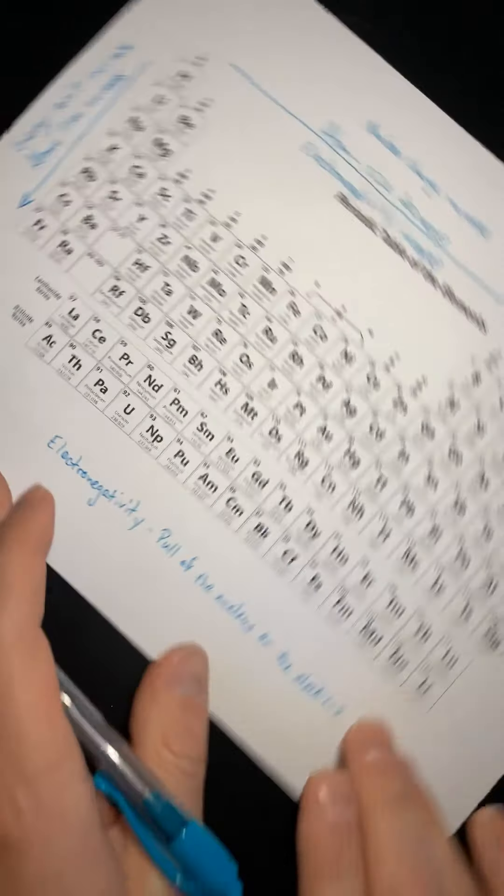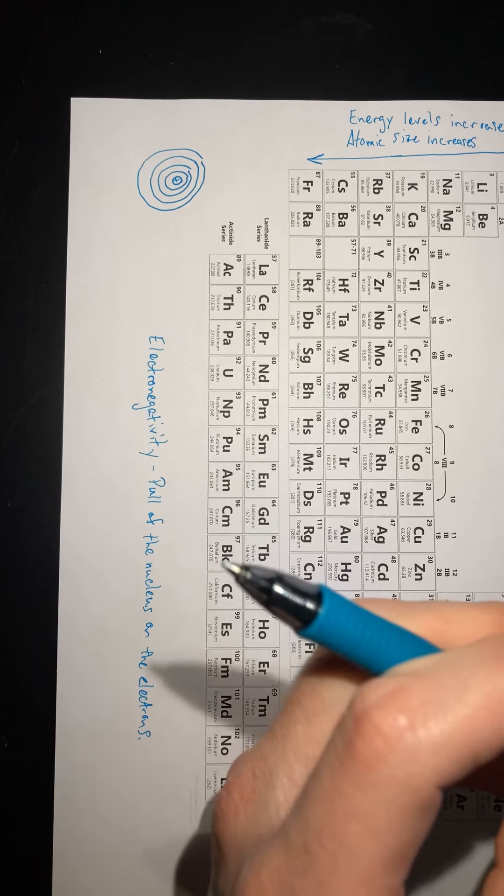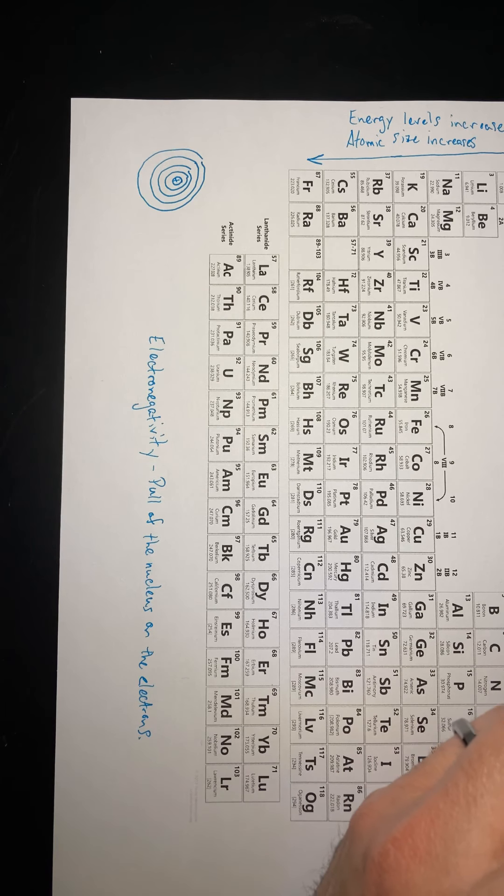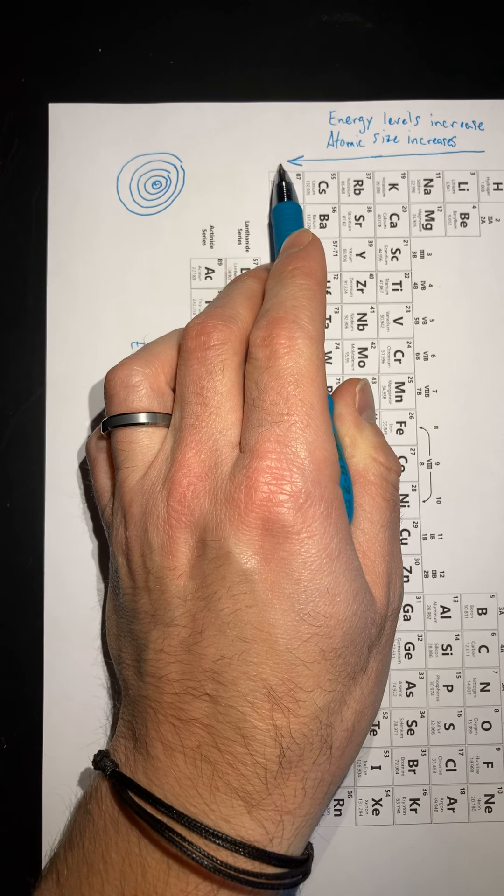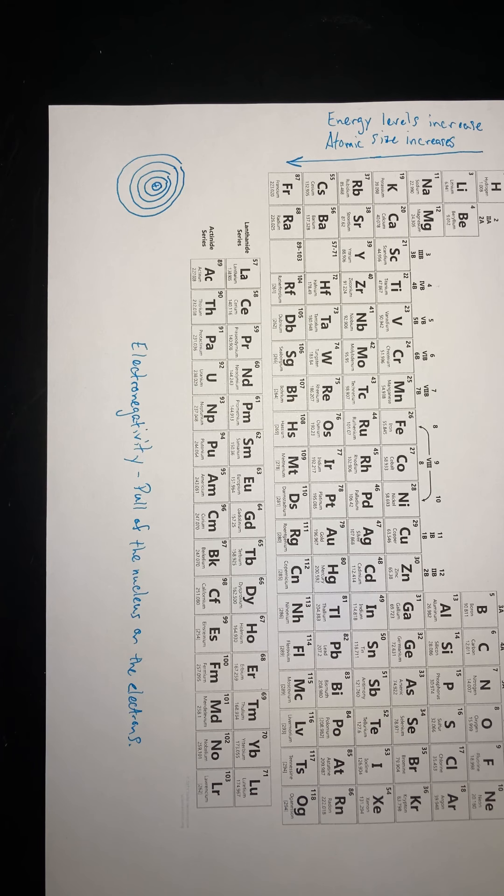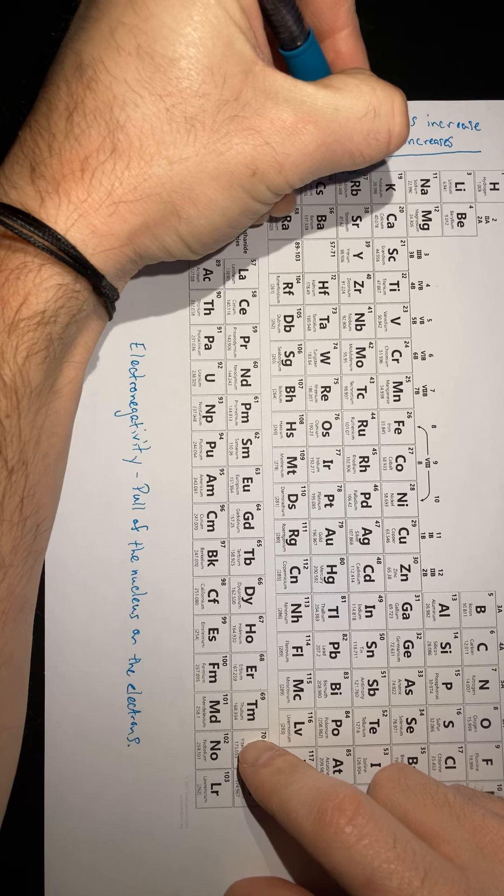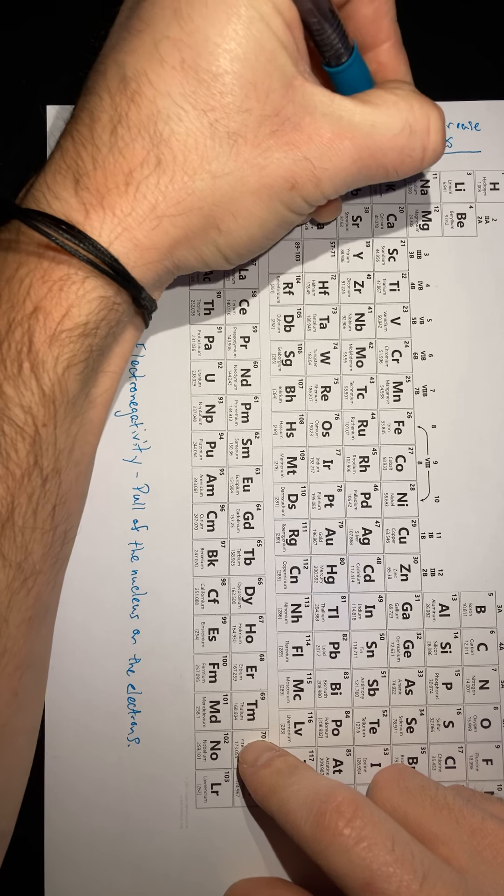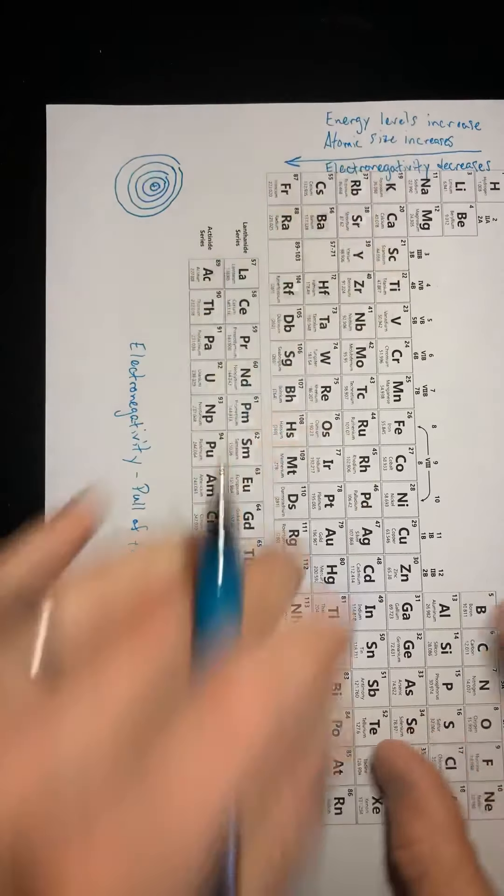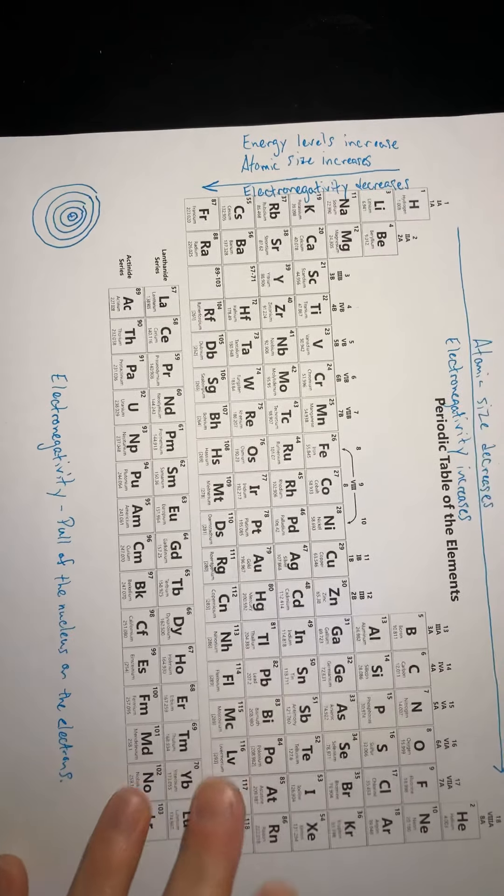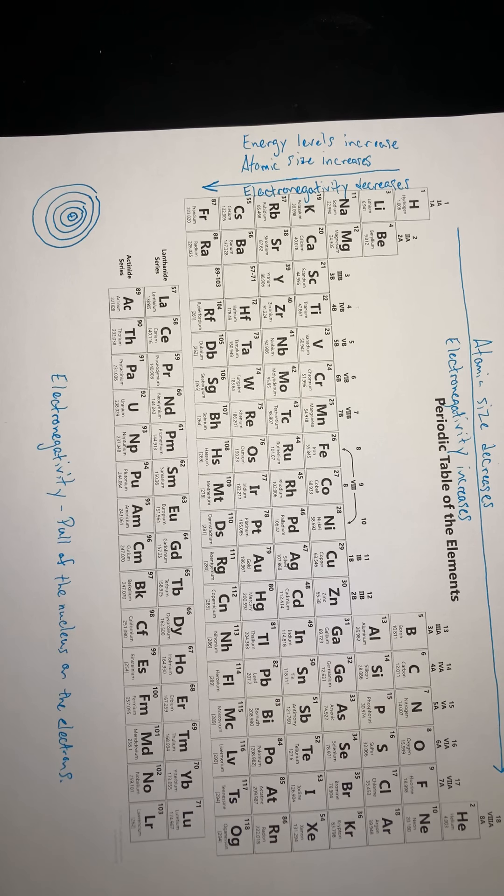And then going down a group, I'm just going to tell you this one because this one's a little bit less obvious. The outer energy levels, they are further away from the nucleus as you go down the column here because you get more energy levels. So, those energy levels that are on the outside are going to be further and further away because you get more of them. So, the electronegativity is going to decrease going down a group because the energy level, the outer energy level is farther away from the nucleus. Therefore, the nucleus cannot pull on it as much.